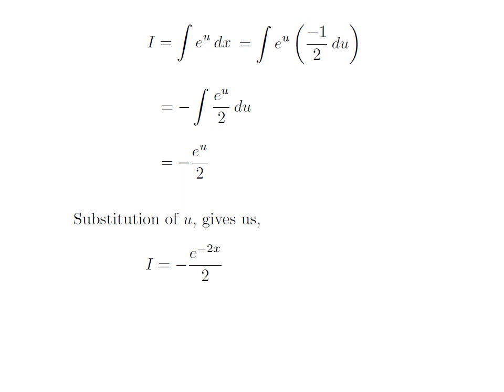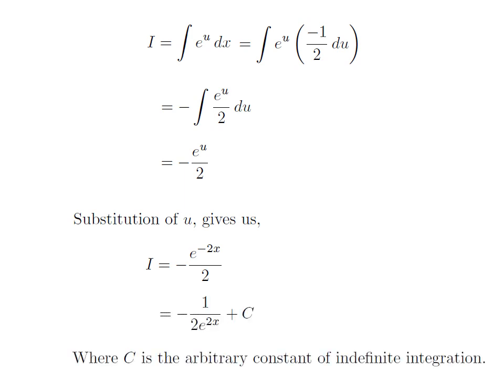So, the integral i is equal to minus e to the power minus 2x divided by 2. Shifting the exponential of minus 2x to the denominator, the exponent of e becomes 2x. So, i, the integral of 1 divided by e to the power 2x with respect to x, is equal to minus 1 divided by 2 into e to the power 2x. Then, we add capital C, which is the arbitrary constant of the indefinite integral. Do not forget to add this constant at the end of any indefinite integration.